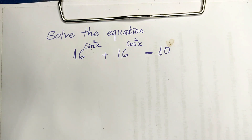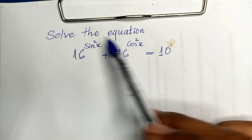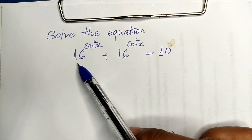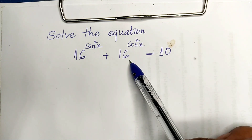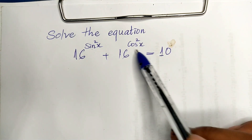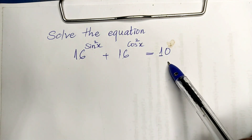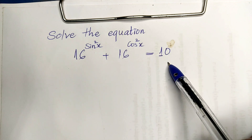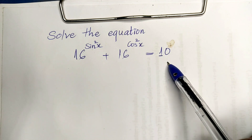Hello everyone, welcome to my YouTube channel. Today I have one exercise on paper. The equation is 16 to the power sine squared of h, plus 16 to the power cosine squared of h, equals 10. Try to solve it yourself first, then come back and watch from beginning to end to verify your solution. Please don't forget to subscribe to my channel for more exciting videos.